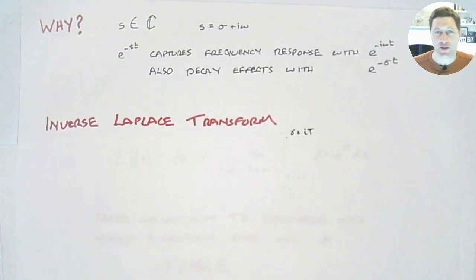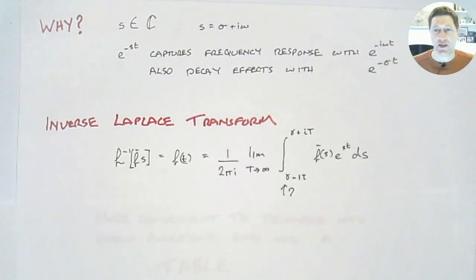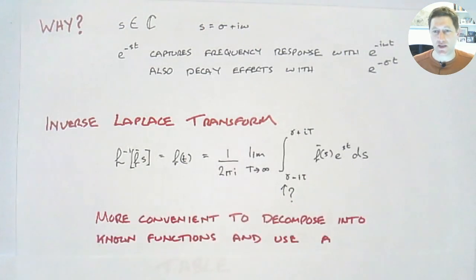So we can transform to time to s. If we want to go backwards, we would be looking at something like this. We can write the inverse Laplace transform with L^(-1). That takes us back to f(t). And this integral would do that for us. But what does this mean? What do these limits mean? Well, you're not going to have to use that. But it's more convenient to decompose your Laplace transform into known functions and use a table to do the inversion. And we're going to look at some techniques for doing that in a later mini-lecture.